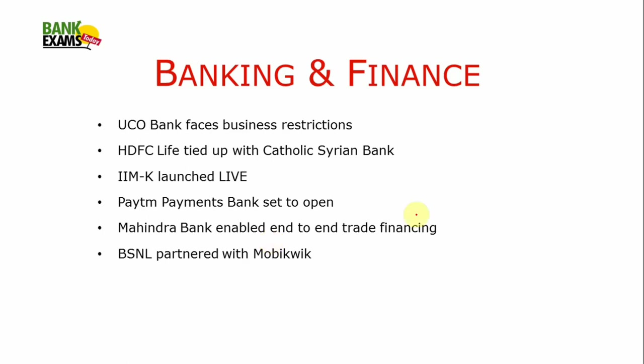Moving to banking and finance, UCO Bank faces business restrictions under the RBI's PCA (Prompt Corrective Action) framework. UCO Bank has become the second bank to face business restrictions — it cannot open new branches or hire new staff. The first bank was IDBI, which was restricted from expanding business due to non-performing assets. HDFC tied up with Catholic Syrian Bank to distribute its individual life insurance products.